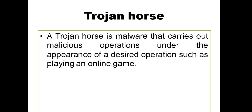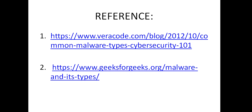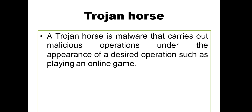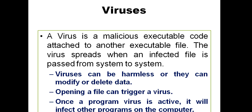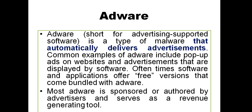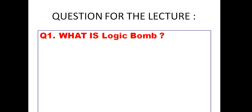Trojan horse is a very popular type of malware that carries malicious operations under the appearance of a desired operation, such as playing an online game. These are the references — you may go through them. Whatever malware types I have discussed today, try to find common real-world examples. Today's question is: what is a logic bomb? Comment your answer. I'll meet you in the next class. Till then, take care. Bye-bye.